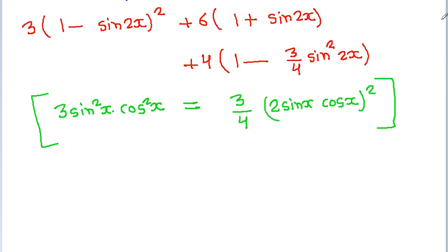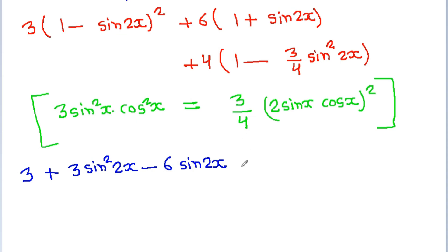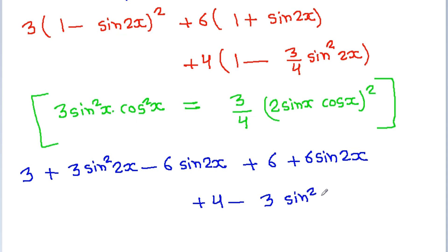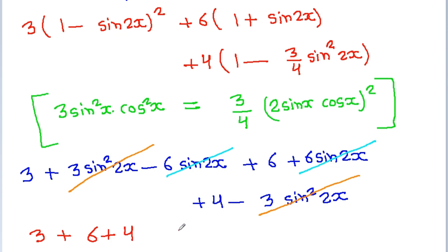Expanding (1 minus sin 2x)² gives 1 plus sin²2x minus 2 sin 2x. Multiplying by 3 gives 3 plus 3 sin²2x minus 6 sin 2x. After collecting all terms and simplifying, the sin 2x and sin²2x terms cancel out, and we get 3 plus 6 plus 4, which equals 13.